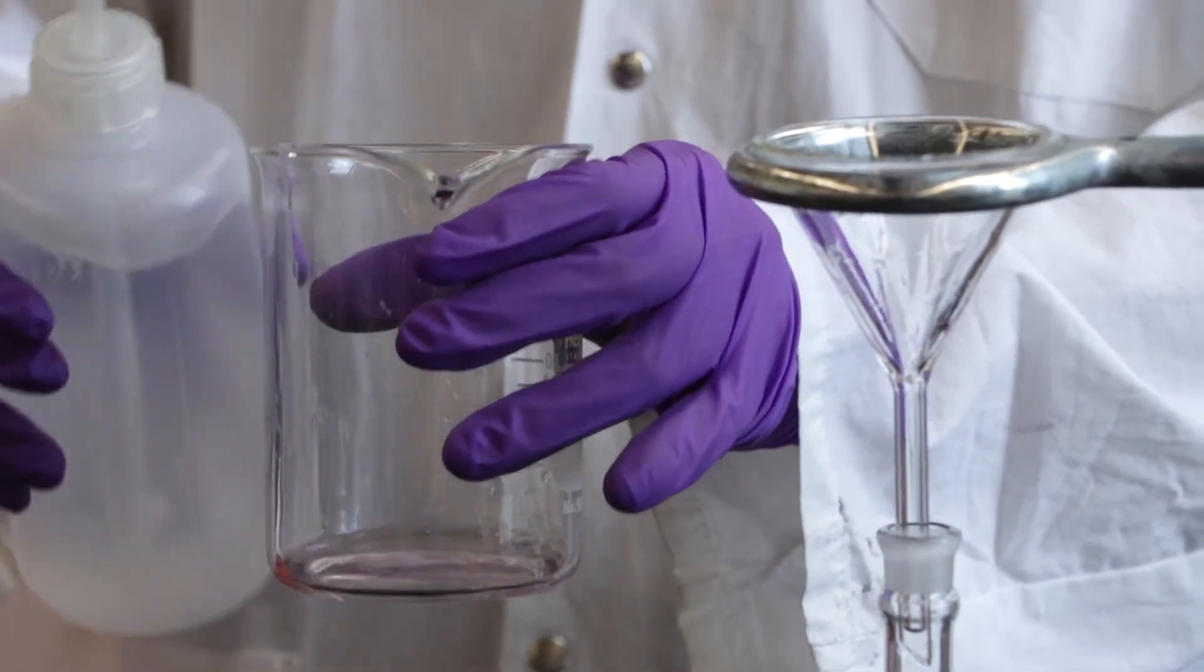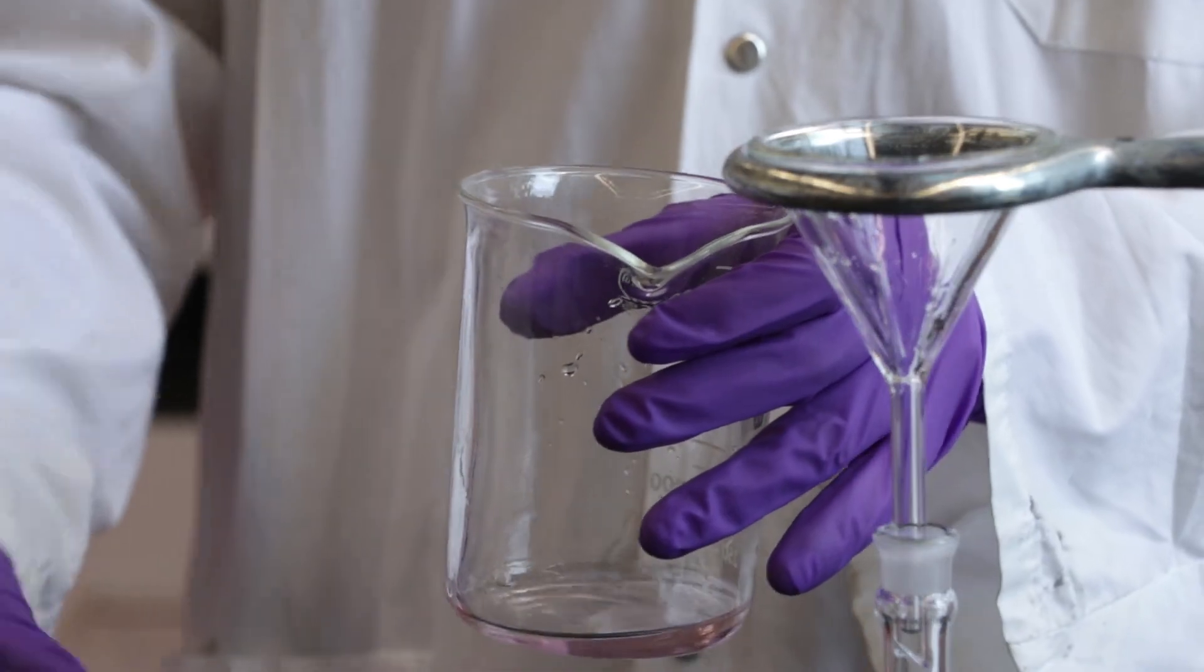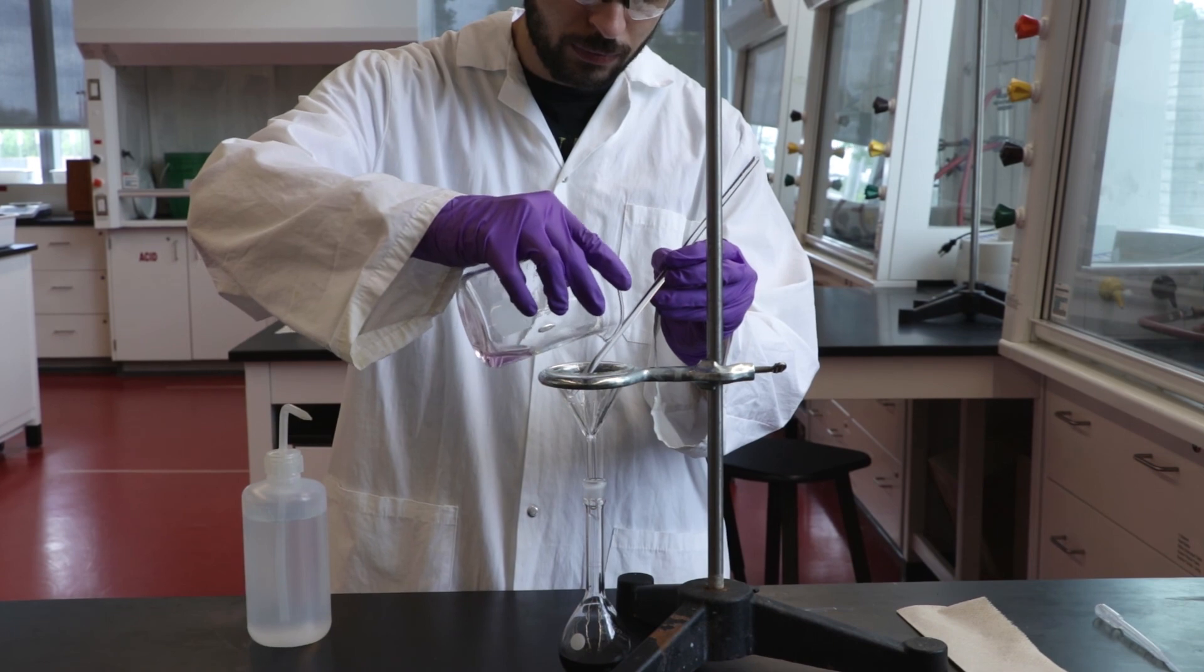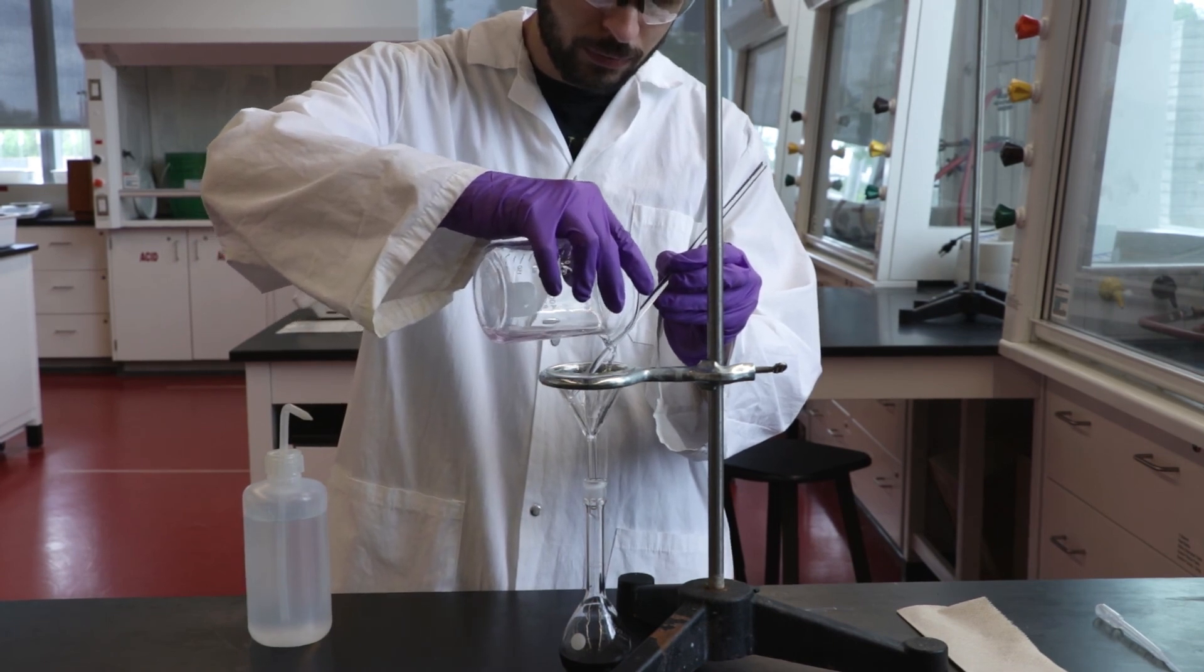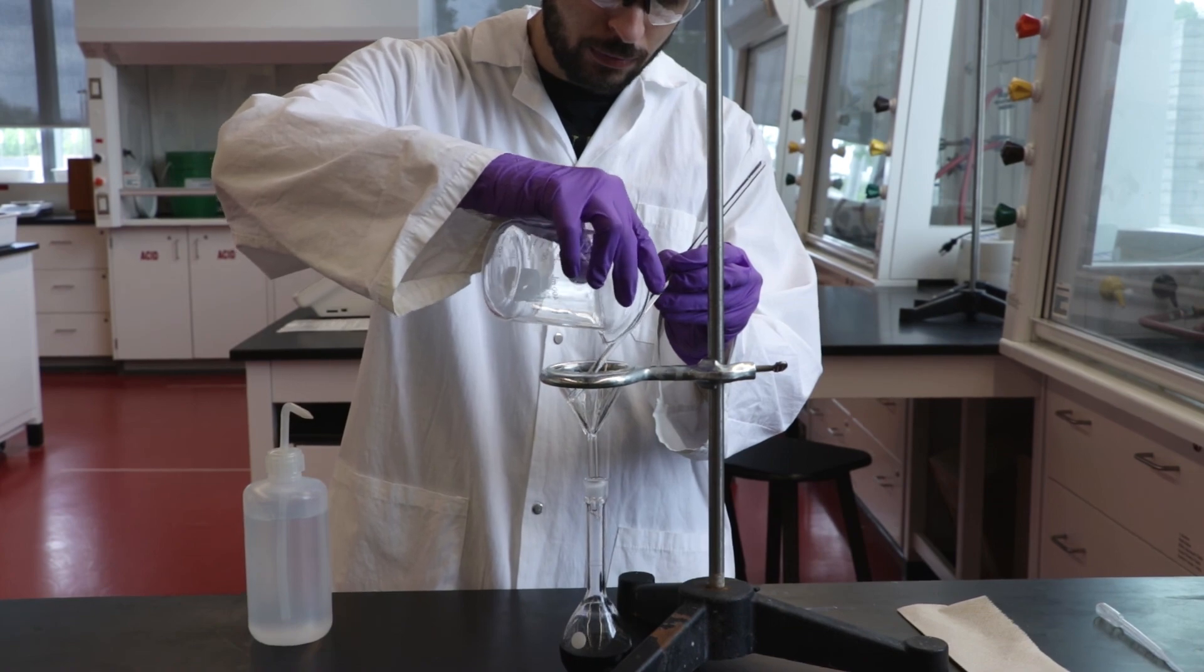Volumetric flasks are used to make solutions of accurate volumes within 0.01 to 0.05 milliliters. The flask in our example will make a solution which is exactly 100 milliliters in volume. Repeat the rinse until no residue is visible on the beaker.